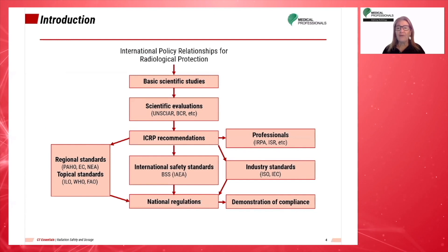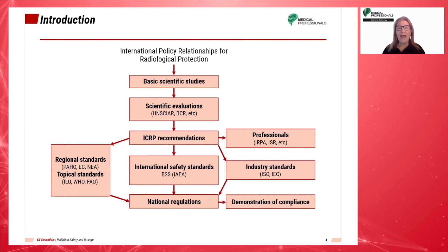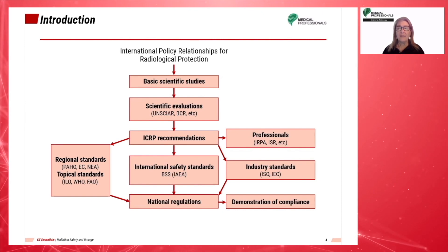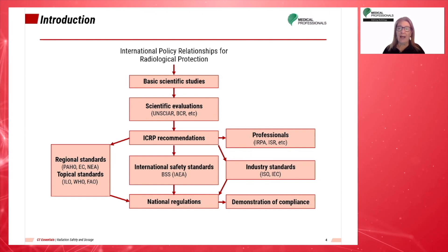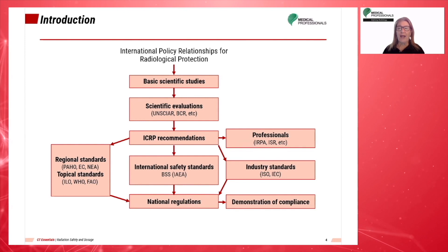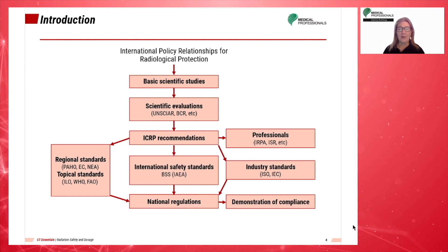The National Council on Radiation Protection, or NCRP, was established to support radiation protection by providing independent scientific analysis, information, and recommendations that represent the consensus of leading scientists. The International Commission on Radiologic Protection, ICRP, is an independent, international, non-governmental organization whose mission is to provide recommendations and guidance on radiological protection concerning ionizing radiation.